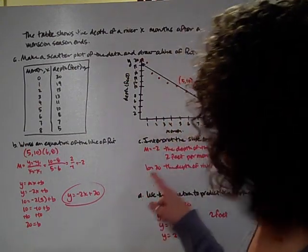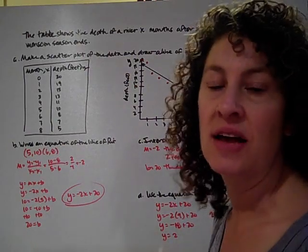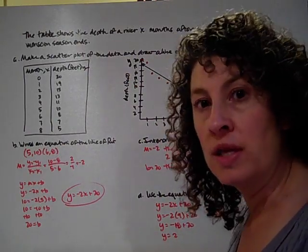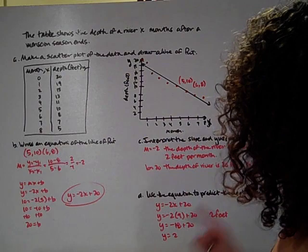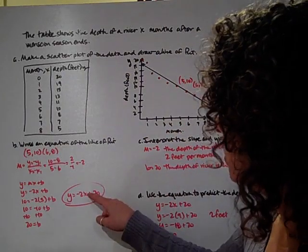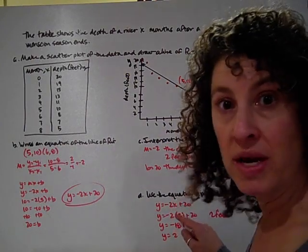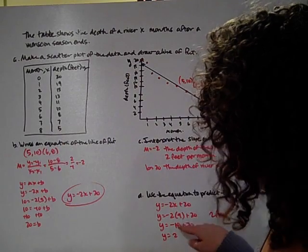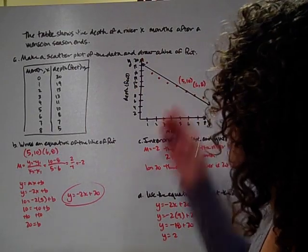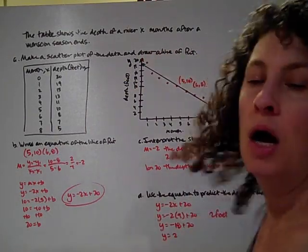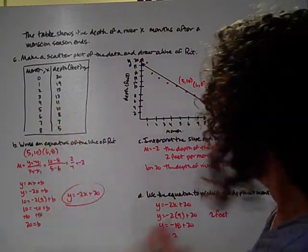And my Y intercept which is 20. 20 is the starting point. So the depth of the river is 20 feet at the start, which is after monsoon season is done. Last question. Use the equation to predict the depth at month 9. So I'm going to take my equation and I'm going to put a 9 in where the X is because my X is my month. Negative 2 times 9 is negative 18. Negative 18 plus 20 gives me 2. So I've got a depth of 2 feet at 9 months. So drawing a line of fit helps us predict other pieces that aren't necessarily in my data pool that I started with.